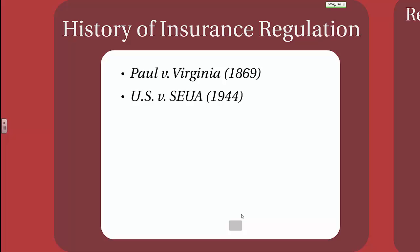SEUA didn't argue that they weren't engaging in monopolistic pricing, but they did say that because monopolistic pricing laws were federal laws — that is, the Sherman and Clayton Acts — and because Paul v. Virginia established that they should be state regulated, they were not subject to those federal laws. However, the U.S. Supreme Court essentially overturned Paul v. Virginia, saying that insurance is interstate commerce and therefore should be regulated by the federal government, establishing a precedent for insurance regulation at the federal and not state level.